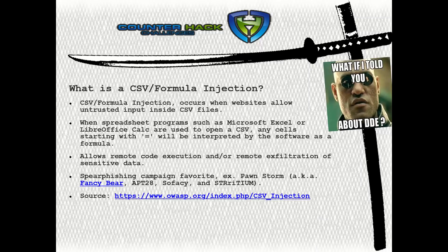So what exactly is a CSV injection and why should you care? According to OWASP, a CSV injection occurs when websites allow untrusted input inside CSV files. This is common among websites with input forms exportable to CSV that allow command strings that spreadsheet software such as Excel or LibreOffice interpret as a formula. It provides a vector for remote code execution or remote exfiltration of sensitive data. It is a spear phishing advanced persistent threat favorite among high-profile attacks by sponsored groups and red teams alike.